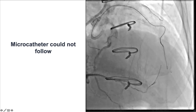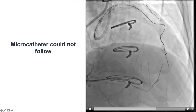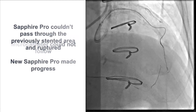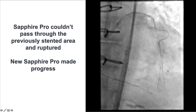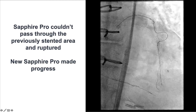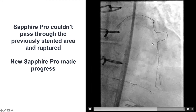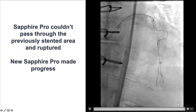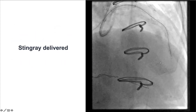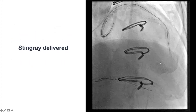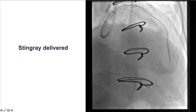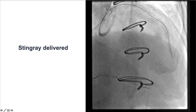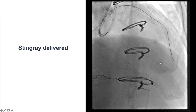Advancing equipment through and around the previously placed stents was extremely challenging. Using a Sapphire Pro — which ruptured the first time and could be delivered a little further the second time — we were then able to advance a Miracle 6 wire and deliver a Stingray balloon for re-entry into the distal true lumen.